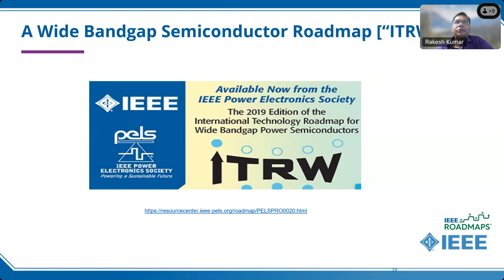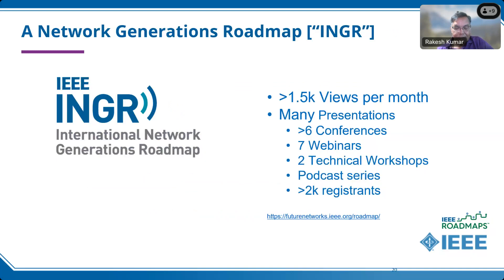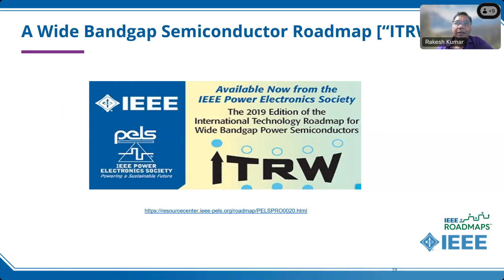Switching gears to wide bandgap semiconductors — I just bought a power charger for my laptop which is half the size of the original but delivers as much or more power. That is afforded by technologies like silicon carbide and gallium nitride, which allow chips to be smaller with more functionality. This technology direction is mapped out in the ITRW — the first edition came out in 2019. At the European conference they were talking about a serious effort from Fraunhofer in Germany on a silicon carbide and gallium nitride roadmap, and we're looking to collaborate on developing that together.